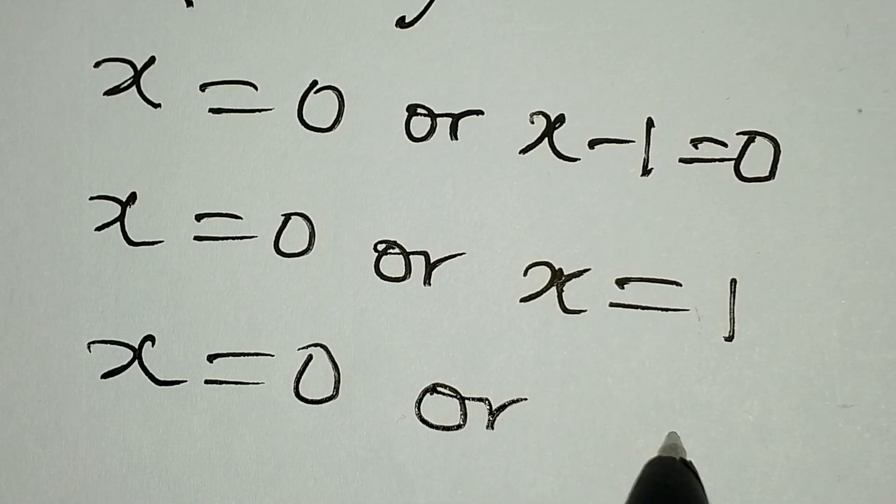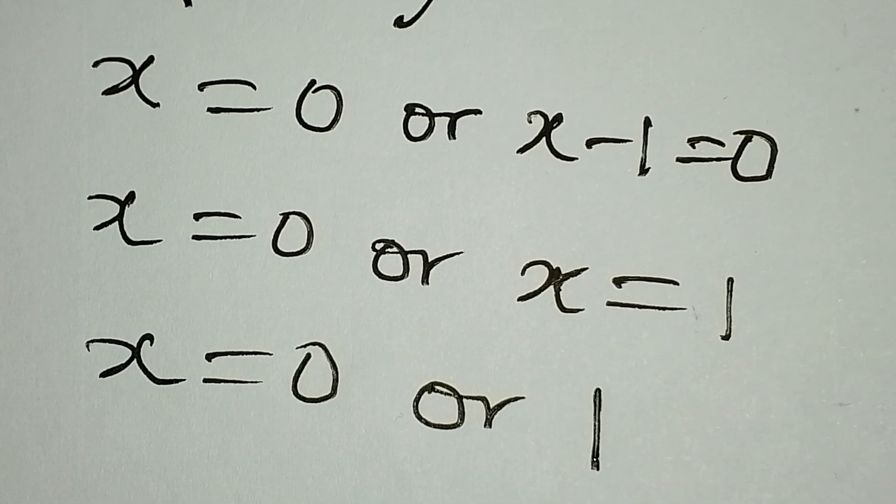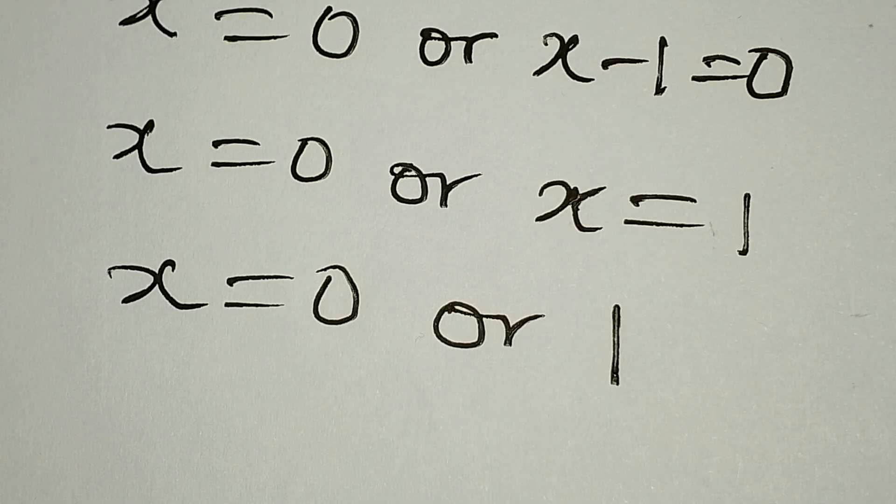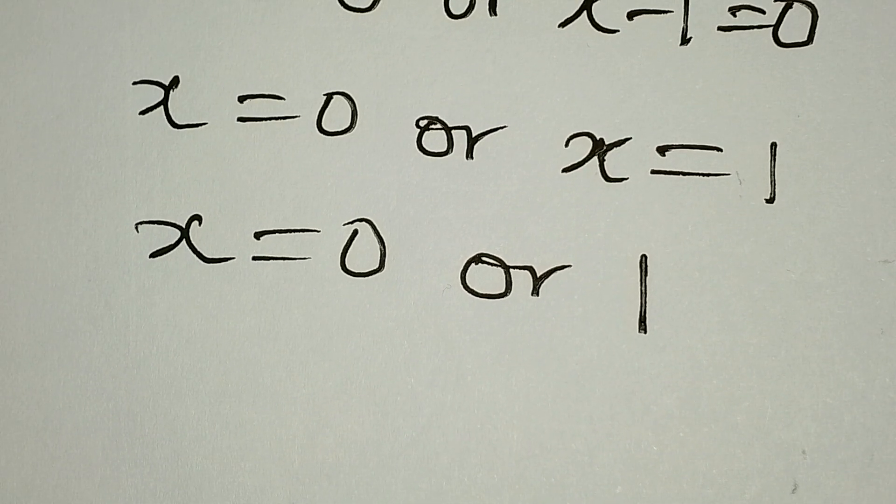Now we have our x to be zero or one. So these will be the two values of x that should satisfy the given equation.